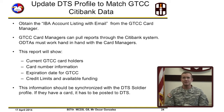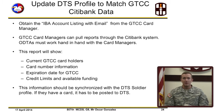Here's how you update DTS profiles to match Travel Card Citibank data. Obtain the IBA Account Listing with Email Report from the Travel Card Manager — they can pull reports through the Citibank system, so ODTAs must work hand-in-hand with the card managers throughout this process. This report will show current travel cardholders, card number information, expiration dates, credit limits, and available funding. This information should be synchronized with the DTS traveler's profile. If they have a card, it is required by regulation to be posted in DTS.